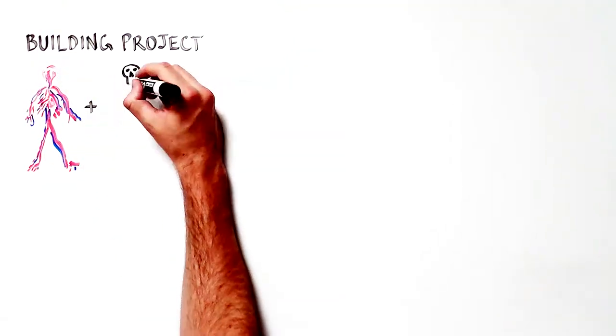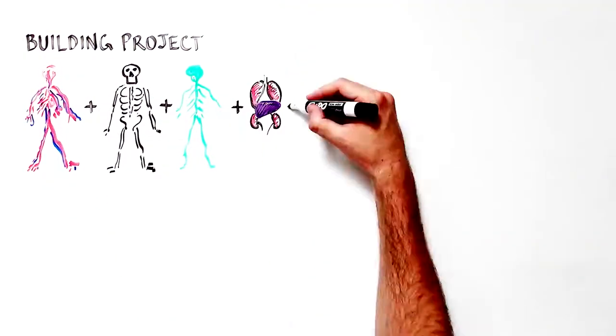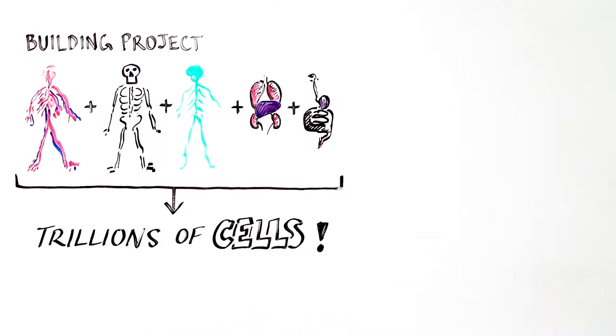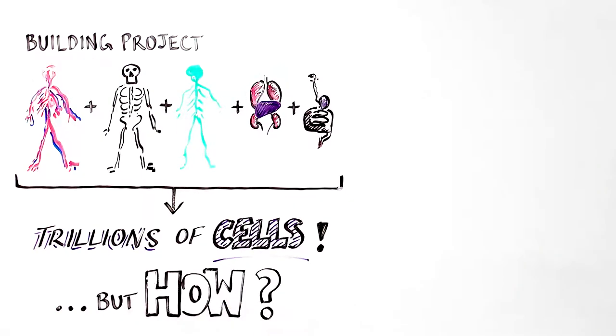Think of our bodies as an extremely complex construction project made from hundreds of parts built from trillions of cells. How are all of the parts formed, correctly assembled during construction, and maintained as we grow old?